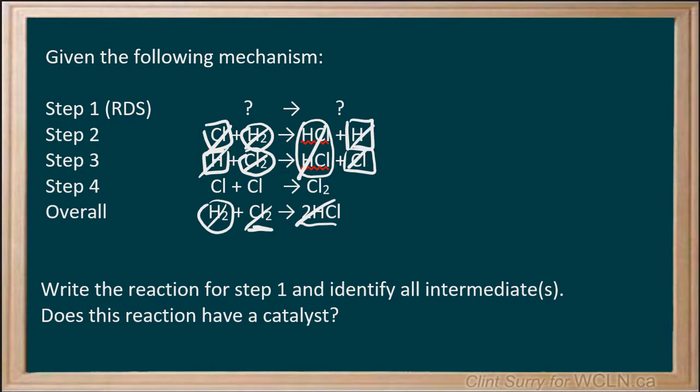Now the problem I've got here is in step number four, I need two Cls and I haven't been given them yet and they're not in the final step. So we know they're not counted as a reactant. Therefore, what I'm going to need to do is put a Cl plus a Cl. That will account for these two here.